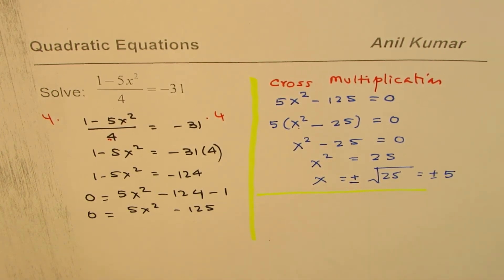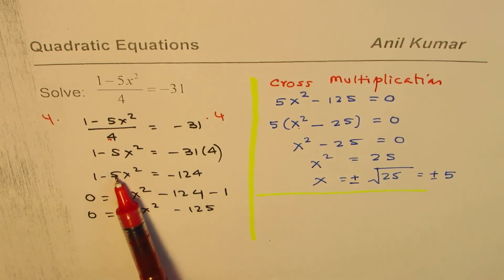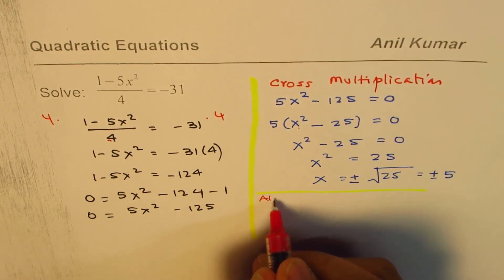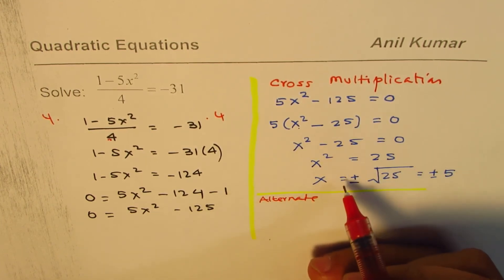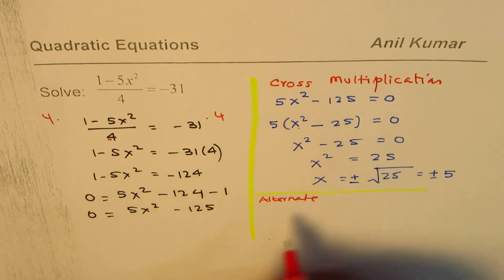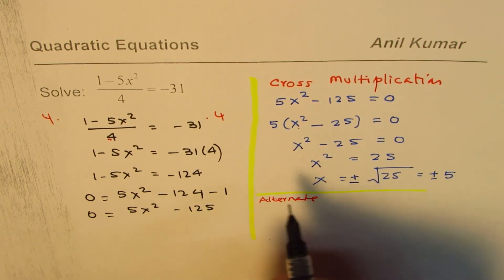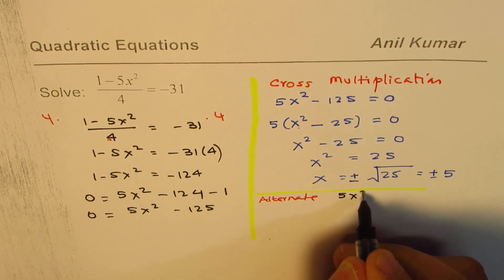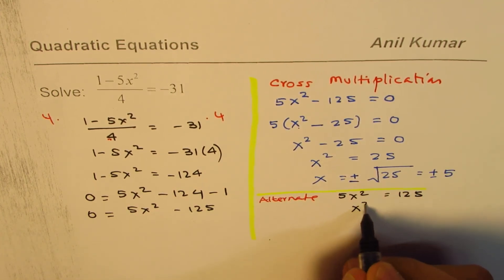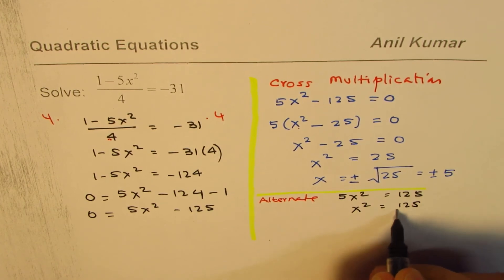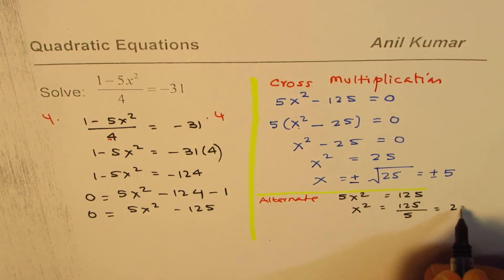Alternate method - we could have taken this on the right, that on the left. So the alternate method will be, however I prefer the factoring method, the alternate method is we could write this example as 5x squared, taking 125 to the right equals 125, x squared equals 125 divided by 5, which is 25.